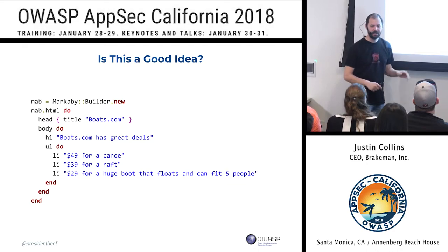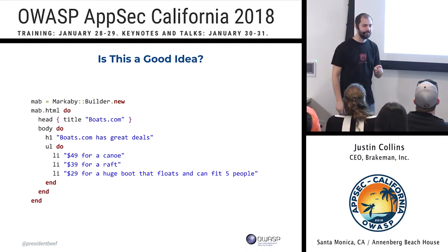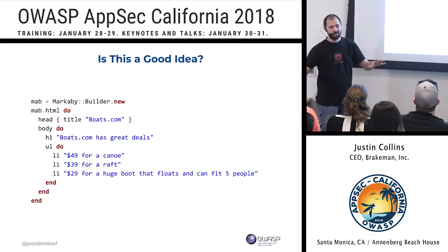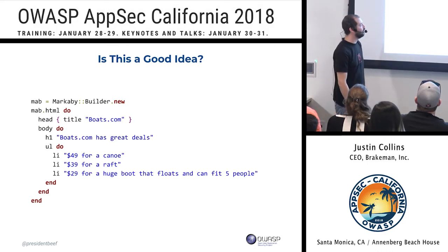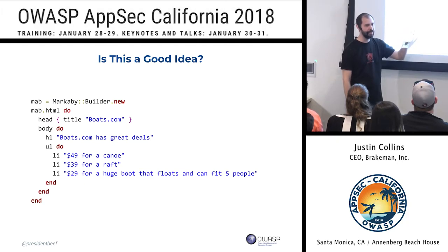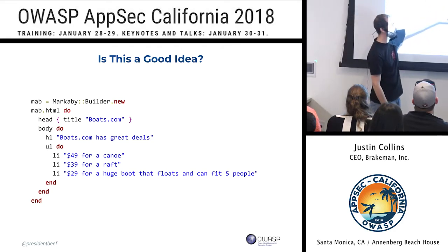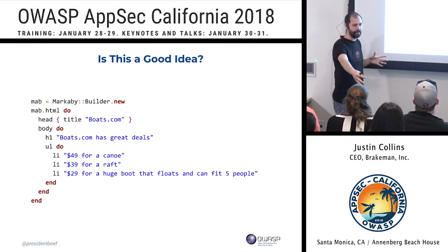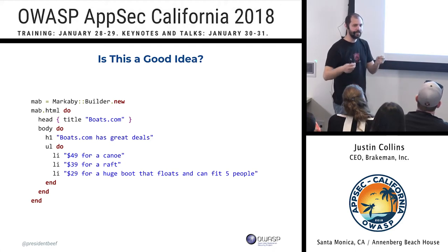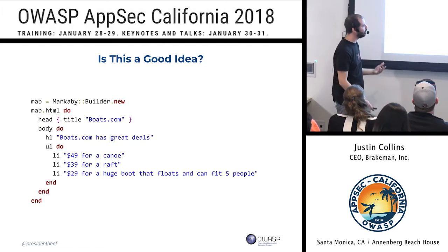Does anyone remember Markaby? A long time ago there was a guy in the Ruby community named Why the Lucky Stiff, and he had this library. The idea is: I'm composing HTML but I'm not working with strings — I have data values and method calls that generate the HTML for me. I'm not saying this is a great idea, but the question is: what can we do that is not manipulating strings, but still gets us to generating those values safely?